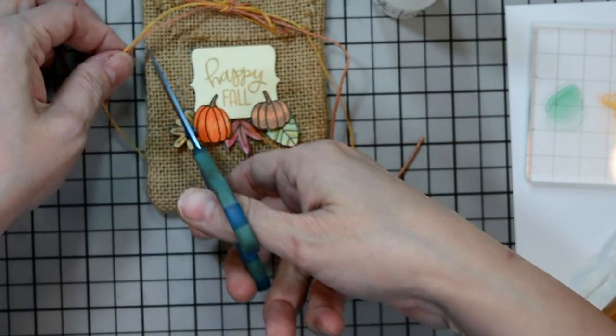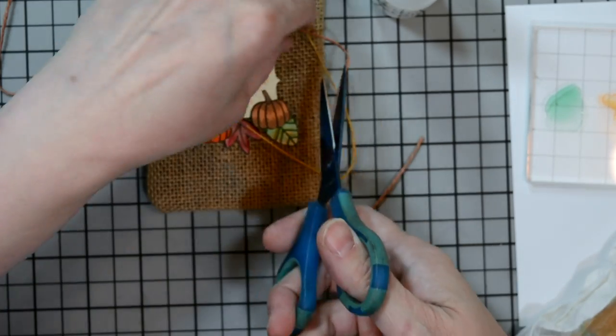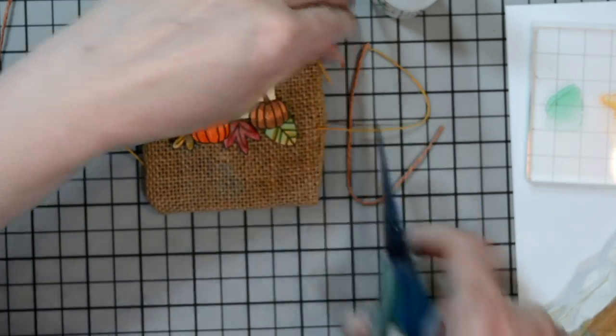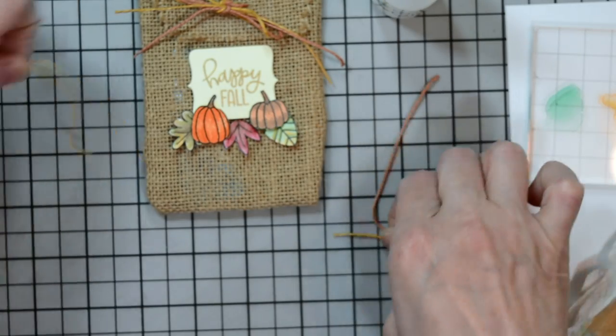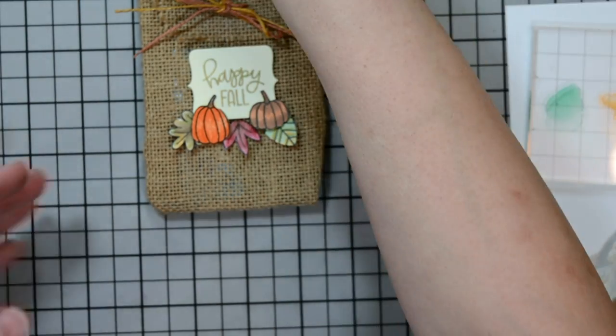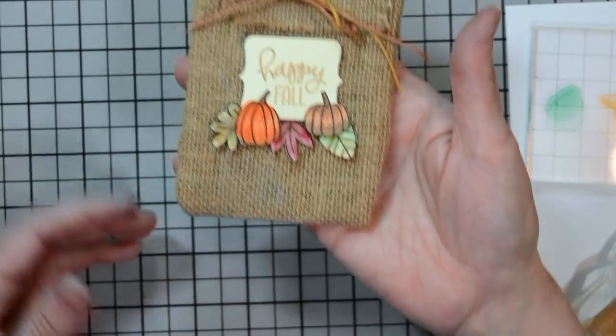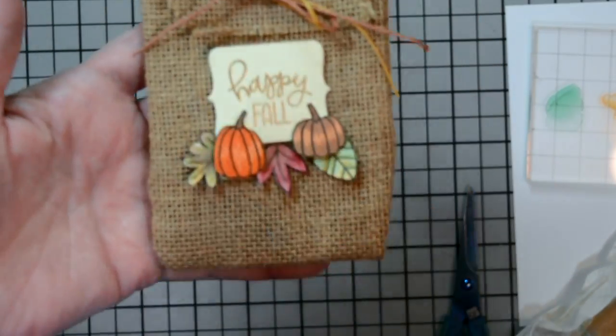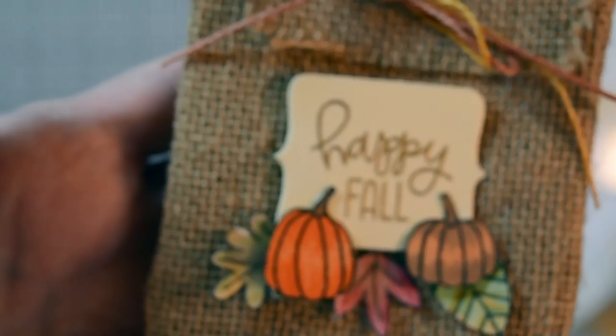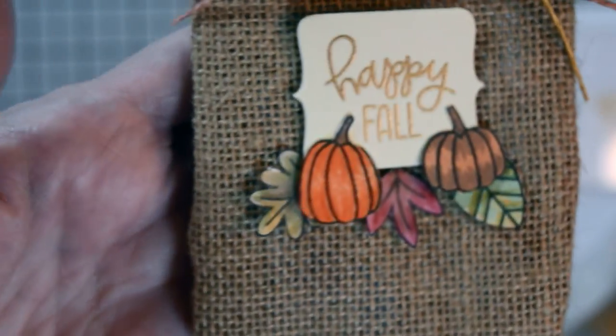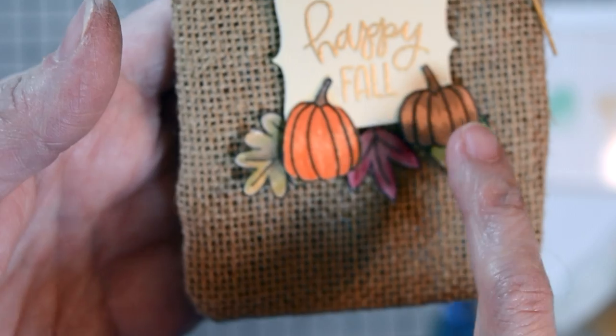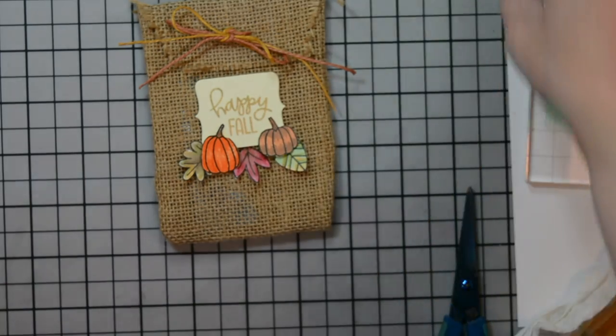Just layering them, creating a little cluster. I apparently had On Point glue on my finger, so my pumpkin adhered to my finger first. Adjust my leaf. And there we go. So now I'm going to trim off the excess of these strings here. And our project is complete. How fun is that? You can fill it with more goodies. I just did a quick one just to show you for the project today. Here's a close-up so you can see the sentiment. It's done in the gold. And our pumpkins.